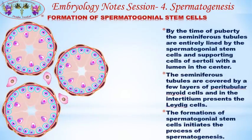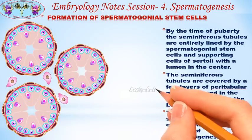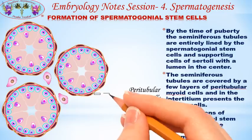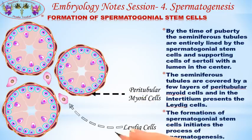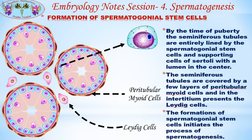By the time of puberty, the seminiferous tubules are entirely lined by spermatogonial stem cells and supporting Sertoli cells, with a lumen in the center. The seminiferous tubules are covered by a few layers of peritubular myoid cells, and in the interstitium are the Leydig cells. The formation of spermatogonial stem cells initiates spermatogenesis.